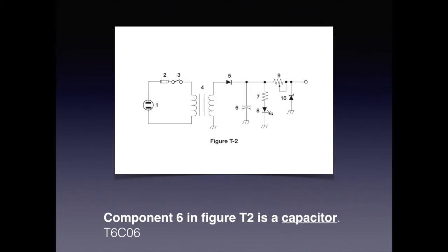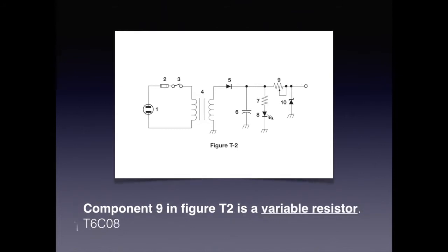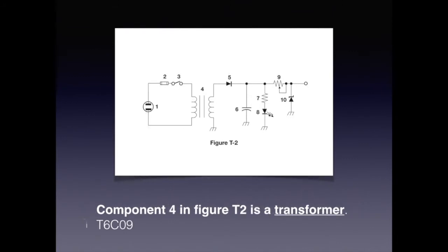And number 10 is a Zener diode, whereas number 5 is a rectifier diode. For the test, you need to know that component 6 in Figure T2 is a capacitor. You also need to know that component 8 in Figure T2 is a light emitting diode. That component 9 in Figure T2 is a variable resistor. And that component 4 in Figure T2 is a transformer.